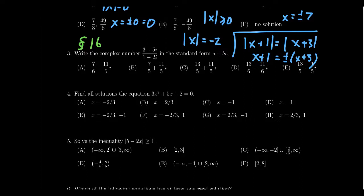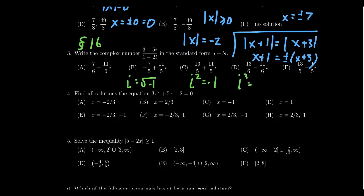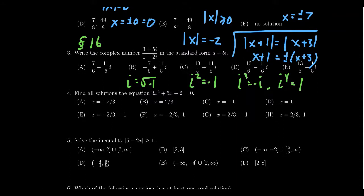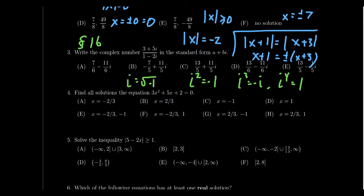When multiplying complex numbers, use the FOIL method since each complex number has a real part and an imaginary part. The important thing to remember is that i squared equals negative 1, since i is the square root of negative 1. That allows us to simplify higher powers: i cubed equals negative i, i to the fourth equals positive 1, and so on. Be comfortable with all four arithmetic operations — addition, subtraction, multiplication, and division — with complex numbers.